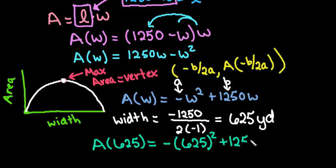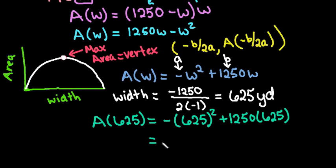Okay, so plus 1250 times 625, and this will give us our maximum area. So once we solve this, we see that our maximum area is 390,625 square yards.